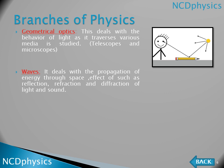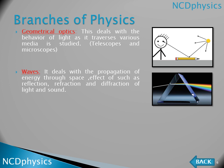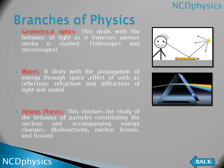The next branch is waves. It deals with the propagation of energy through space and effects such as reflection and diffraction of light and sound. For example, light passing through a prism is divided into different colors. We study how energy propagates, how sound propagates, and how light propagates.